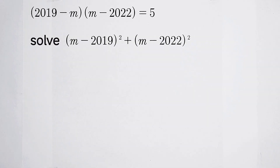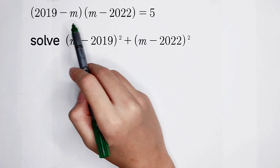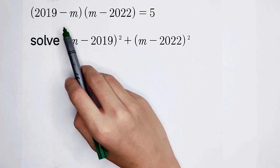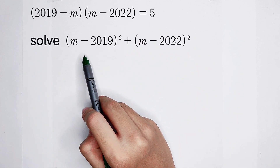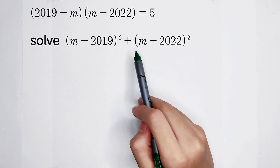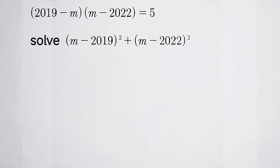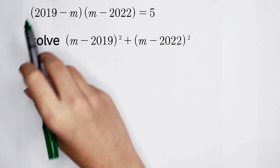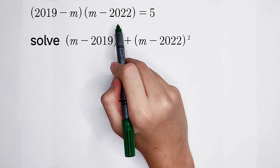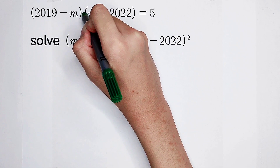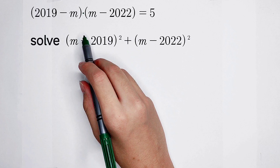Welcome to MathWinno. We are given (2019 minus m) times (m minus 2022) and this is equal to 5. We need to find the value of (m minus 2019) all squared plus (m minus 2022) all squared. Because 2019 minus m and m minus 2022 are connected by multiplication, it's complicated.